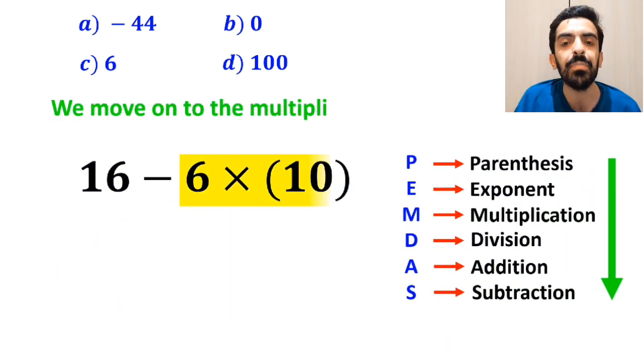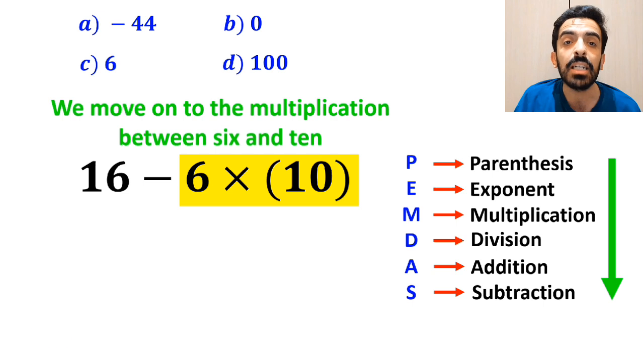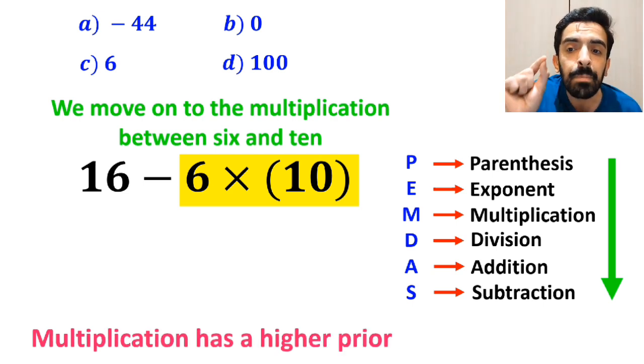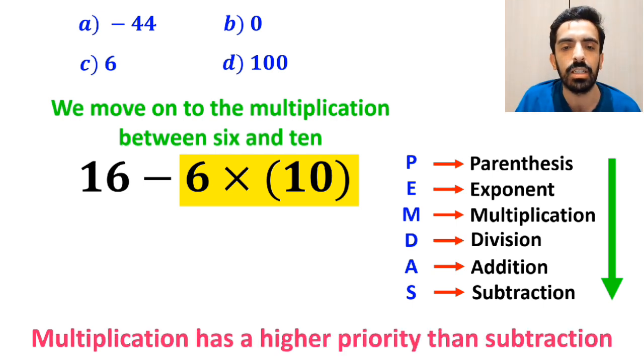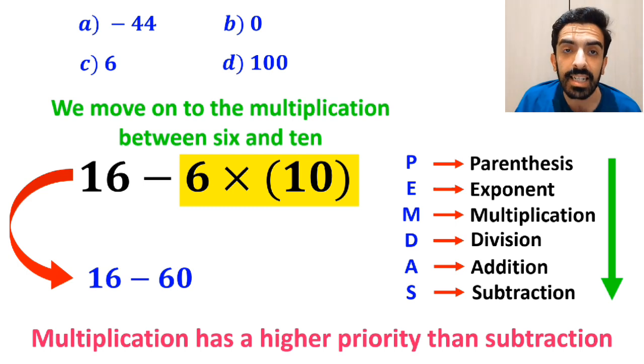In the next step, we move on to the multiplication between 6 and 10 because multiplication has a higher priority than subtraction. So we will write this expression as 16 minus 60, which finally gives us the answer negative 44.